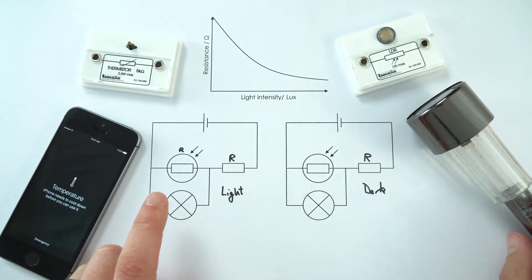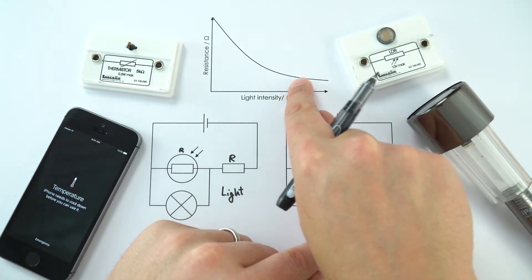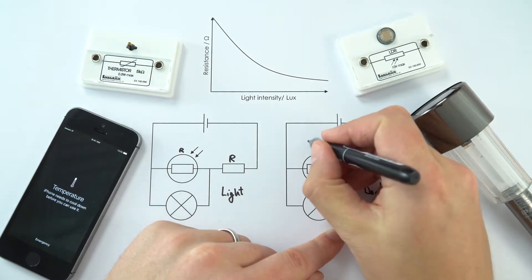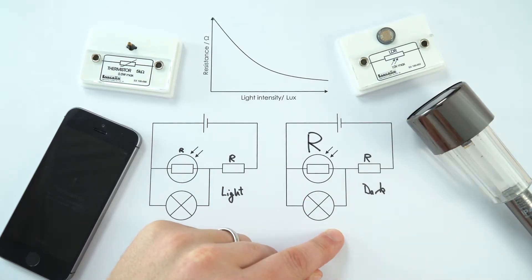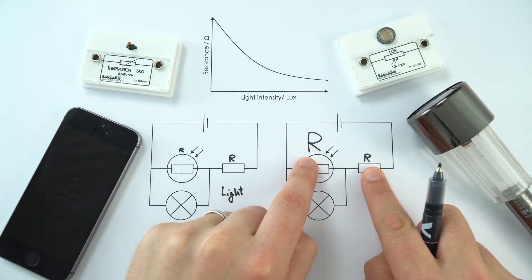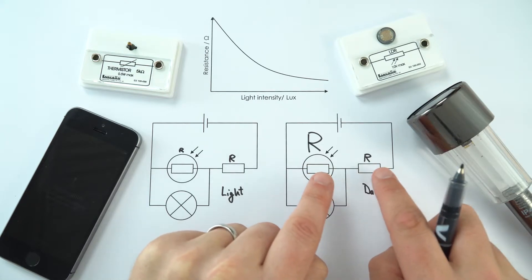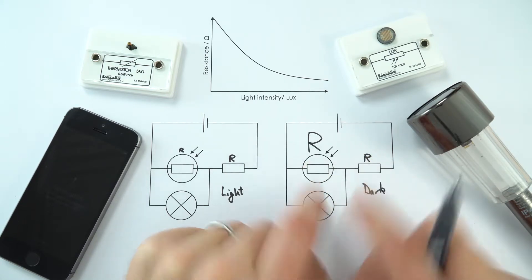However, when it gets dark and the resistance of the LDR increases, this then has a higher resistance. I'm going to put a big R over there. What happens now is that that stayed at the same value, that resistance has increased, and therefore the way it shares that potential difference, the way that potential difference is divided, is going to change.